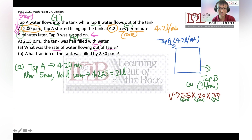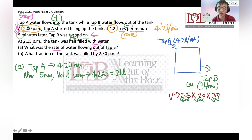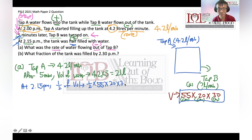At 2:15pm, 'half filled' means half of the volume. To activate this part: 55 times 20 times 30 equals 16,500 cm cubed. Tab B has been on for 10 minutes. Something happened — the amount of water after five minutes was so much, then it dropped to so much. What does that mean?